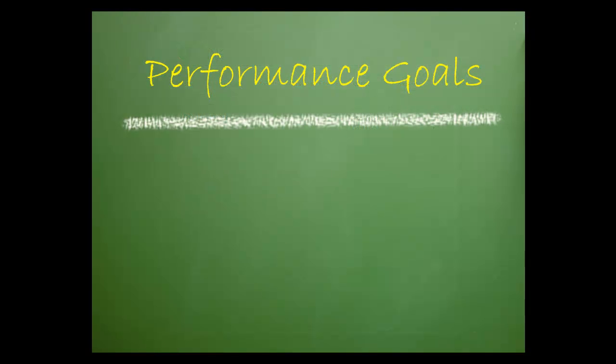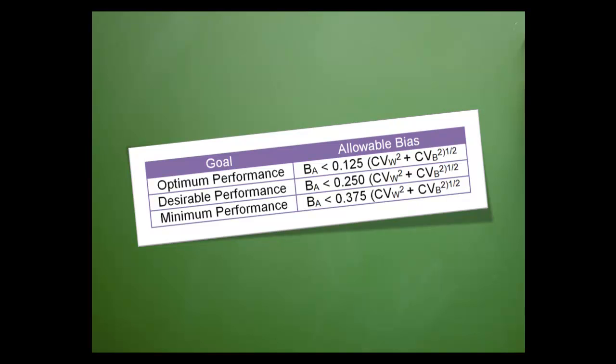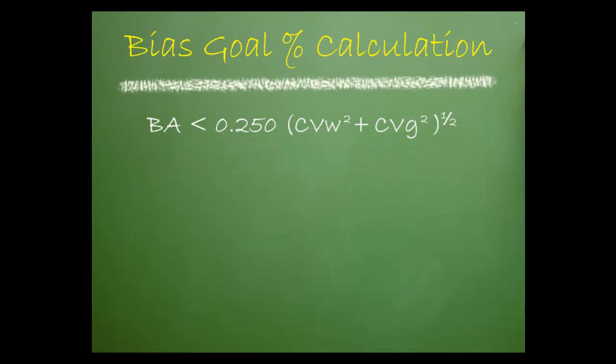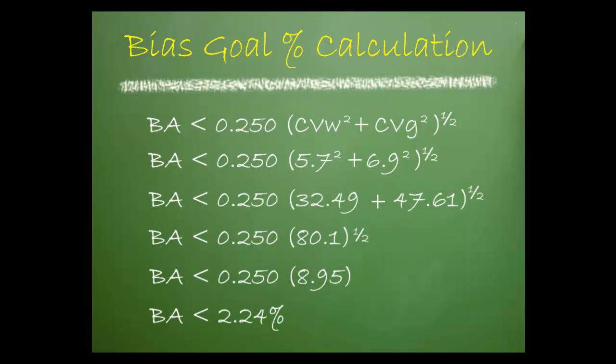We have the same three performance goals to choose from for our bias goal: minimum, desirable, or optimum. Using formulas suggested by Dr. Frazier, allowable bias is calculated as shown where BA represents total allowable bias, CVW represents within subject biological variation, and CVB represents between subject variation. If we were to choose a performance goal for bias of desirable, and the published CVW is 5.7% and CVB is 6.9%, then the BA would be 2.24%.